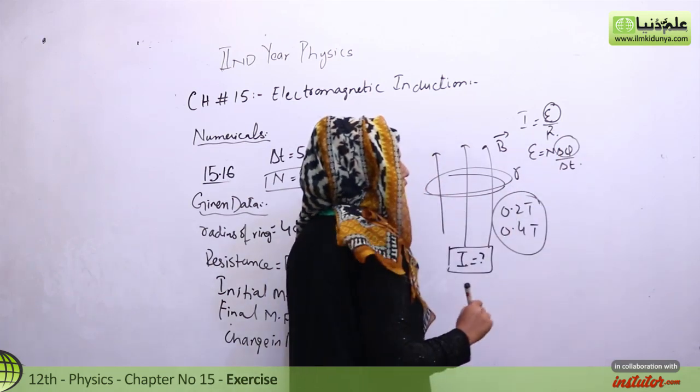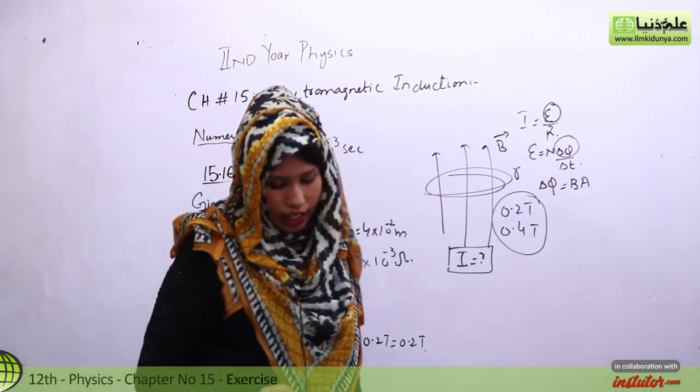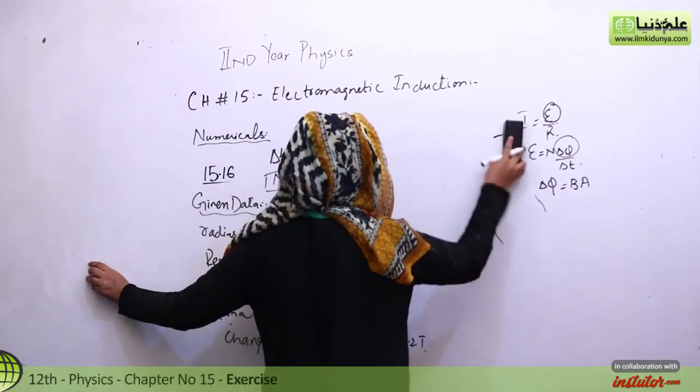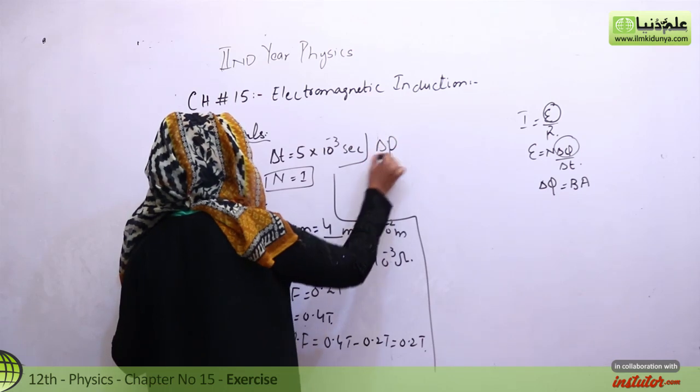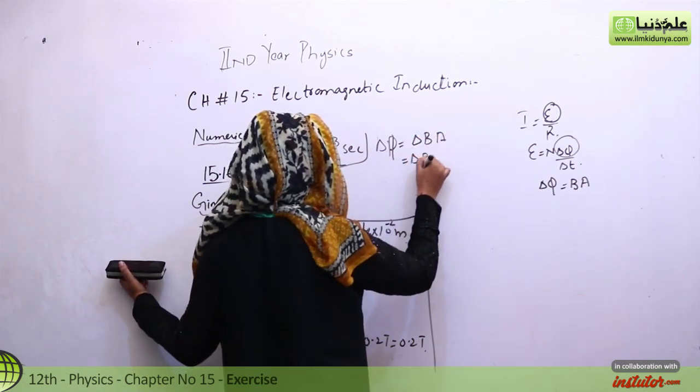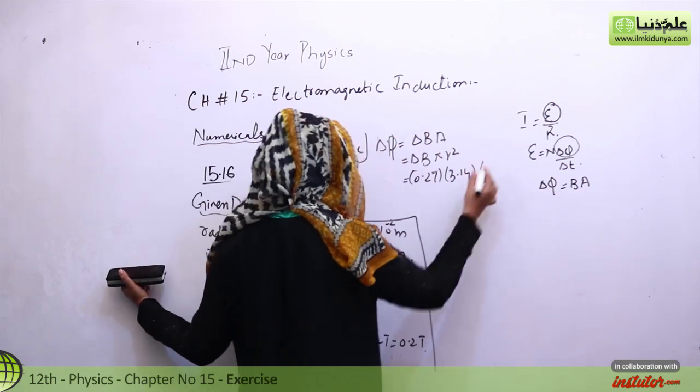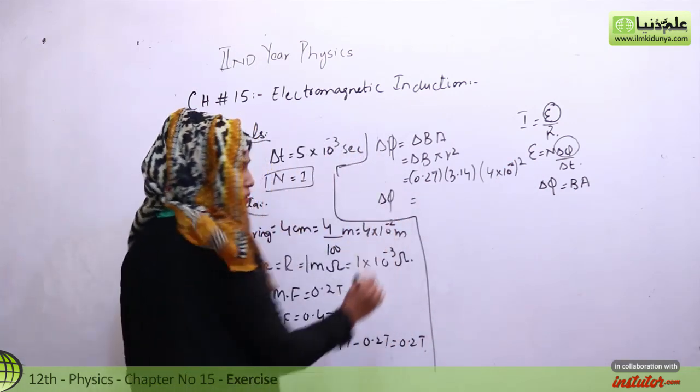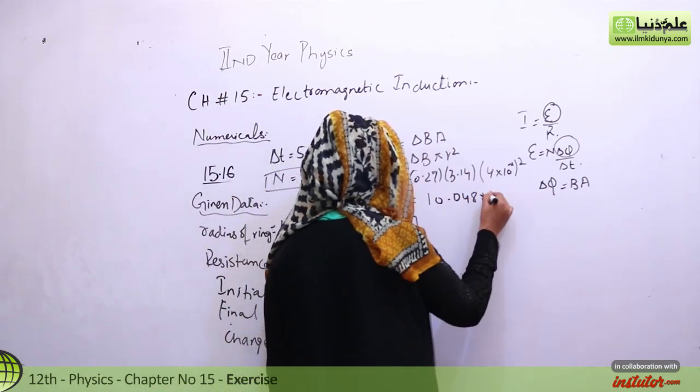The formula for induced EMF is del phi over del t. Del phi is the change in flux, which equals delta B times A. A equals pi r squared. So the change in magnetic field is 0.2 tesla, times 3.14, times radius squared, which is 4 times 10 to the power minus 2 squared. When we solve this, the change in flux value is 10.048 times 10 to the power minus 4 weber.